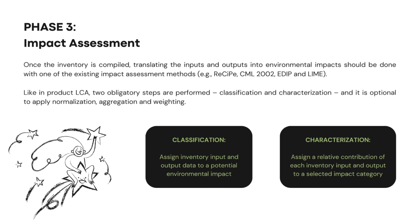Phase 3 is impact assessment. The approach to this phase of OLCA is basically the same as that of product LCA, so the same requirements and guidelines apply. Once the inventory is compiled, translating the inputs and outputs into environmental impacts should be done with one of the existing impact assessment methods — for example, ReCiPe, CML2002, ADIP, and LIME. Common impact categories include climate change, resource depletion, acidification, eutrophication, and human toxicity. Like in product LCA, two obligatory steps are performed: classification and characterization; and it is optional to apply normalization, aggregation, and weighting.